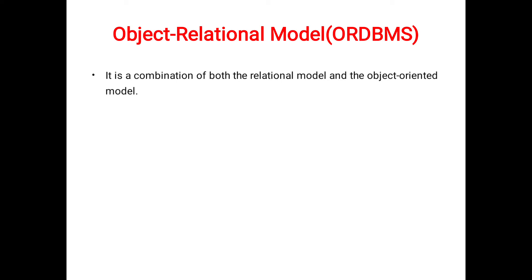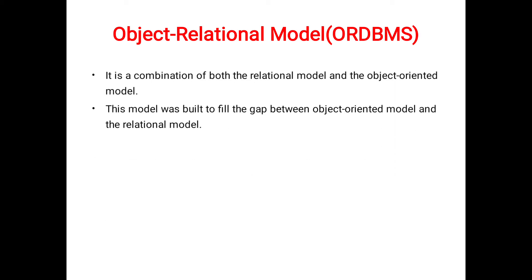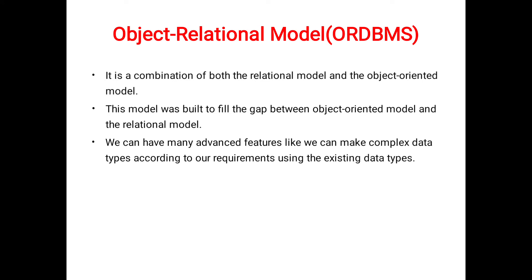The object oriented model is a combination of object oriented programming and the relational database model, while the object relational model is a combination of the relational model and the object oriented model. Please observe the difference between the object oriented data model and the object relational model. The object relational model fills the gap between them, addressing the disadvantages of both.